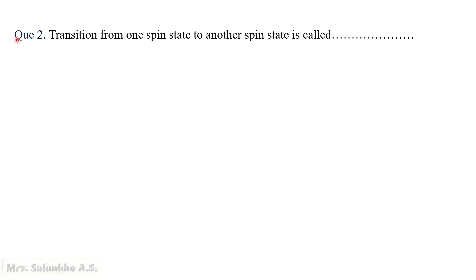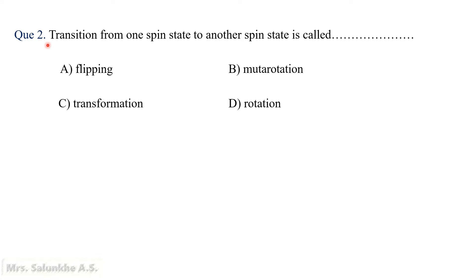Therefore, the correct answer is option C, 6C30. Question 2: Transition from one spin state to another spin state is called — options are: clipping, mutarotation, transformation, and rotation.